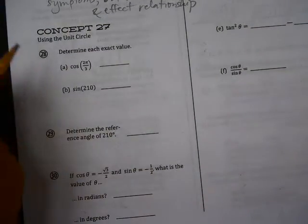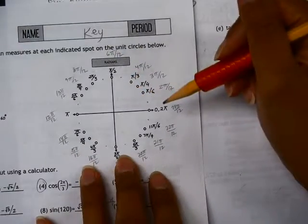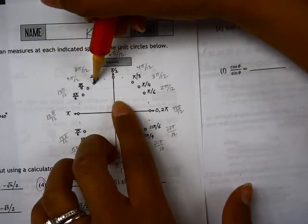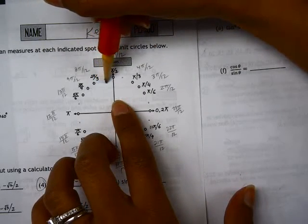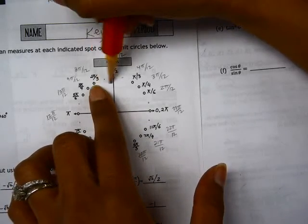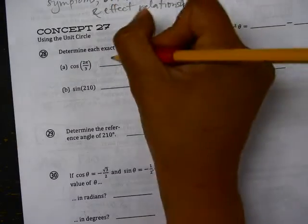So on our unit circle here, 2π over 3, we're doing cosine. Cosine represents the horizontal length, and this is the shortest length, which is 1 half. It is negative because we're on the negative side of the x-axis, so negative 1 half.